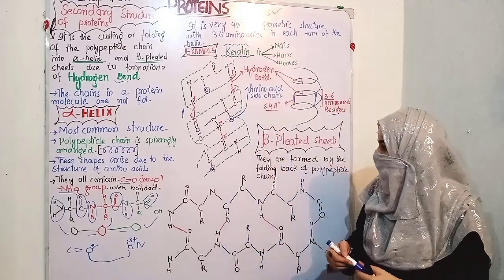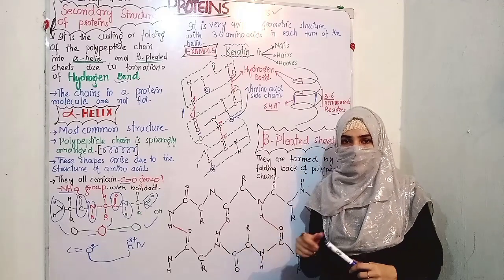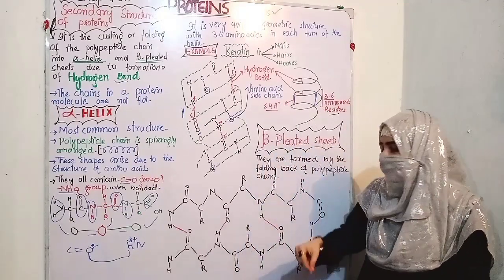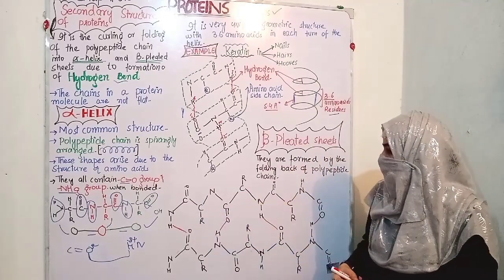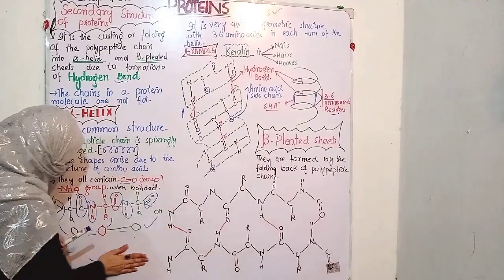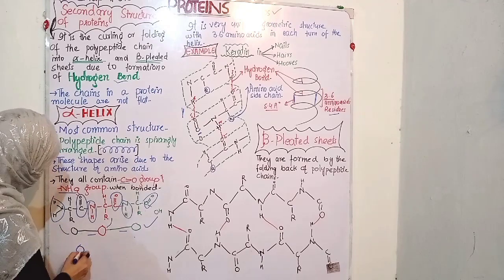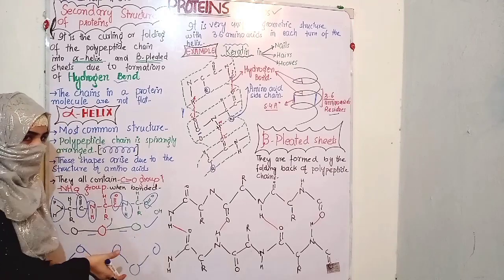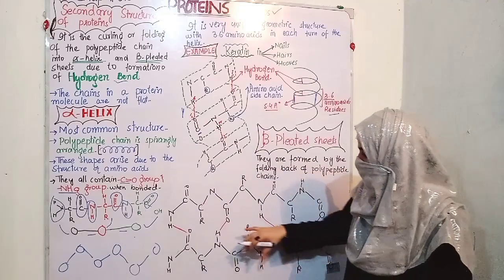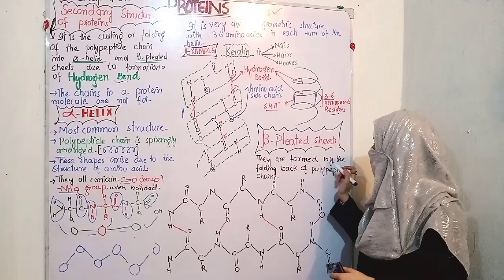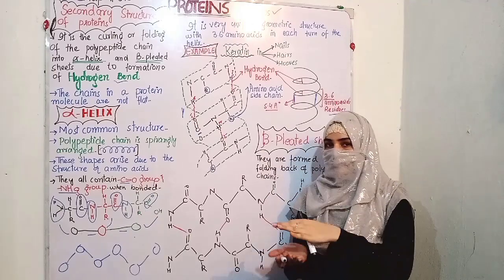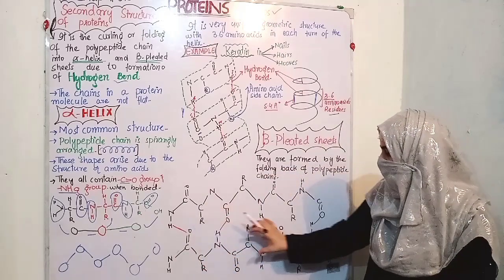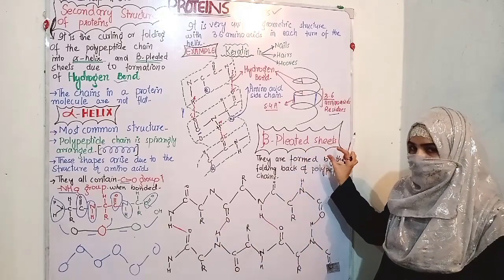Besides the alpha helix, the other secondary structure is beta-pleated sheets. Beta-pleated sheets form a zigzag structure. For an MCQ-wise example you can use keratin for alpha helix. Beta-pleated sheets are formed by the folding back of polypeptide chains. This is a relatively simple structure.